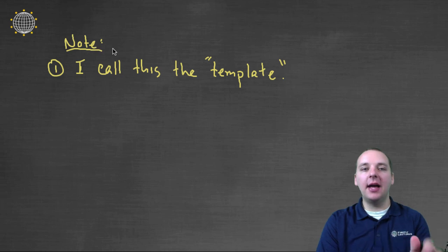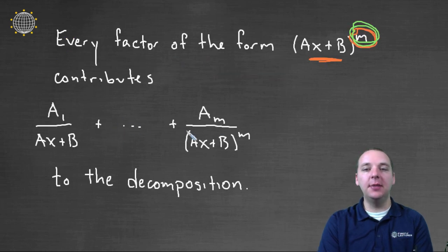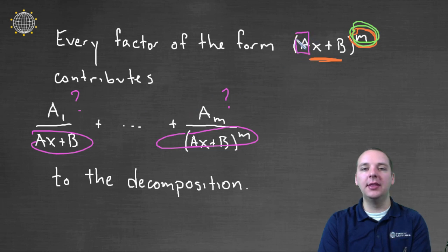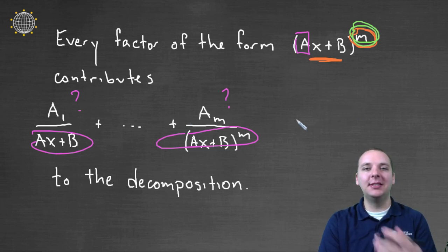Now just a couple of side notes. Personally, I call this the template of my answer — the form contributed by a term in the denominator. This template is helpful because the denominators are already finished; we know AX plus B, so those are done. But the numerators we don't know yet — they're still mystery numbers. I don't know what A sub 1, A sub 2, or A sub 3 specifically are. These A's in the numerator have nothing to do with the A in AX plus B — that's just a coincidental similarity in letters. A sub 1 might be 5, A sub 2 might be negative 7 — we don't know. So all it is is a template of the structure of the decomposition, not the specific answer.